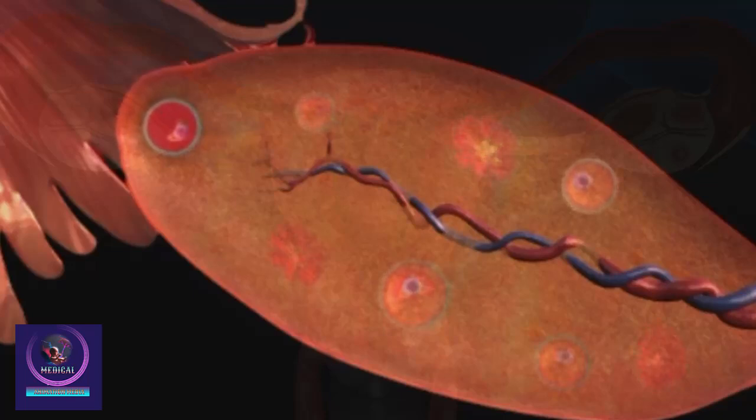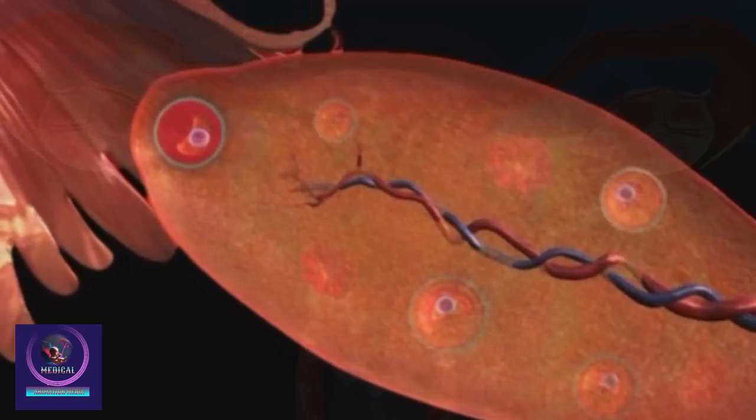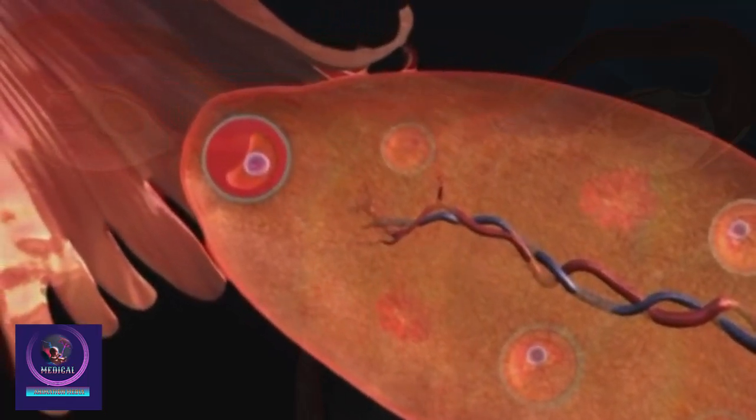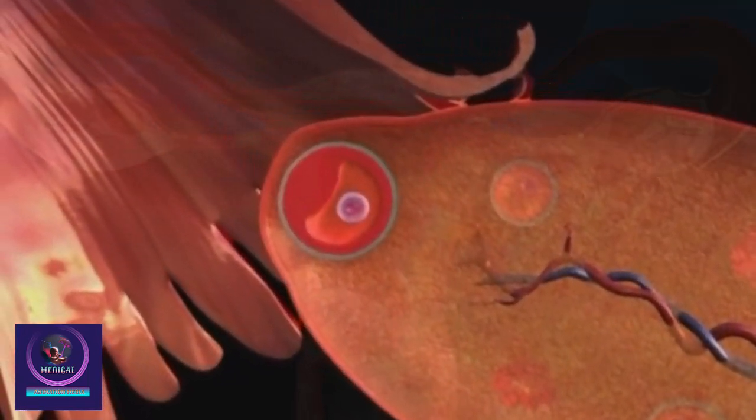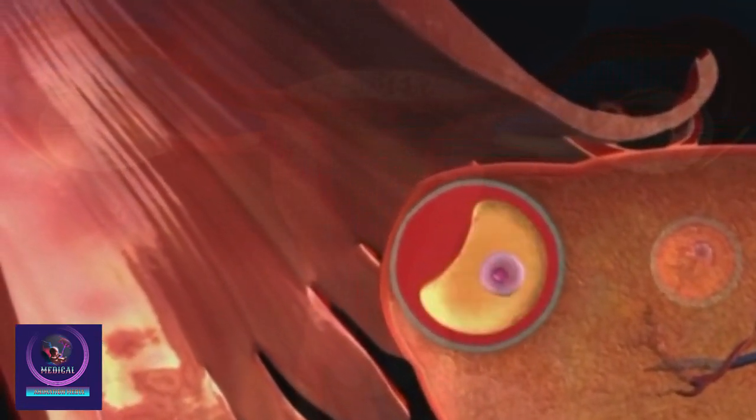Every month, several follicles start to grow. However, only one follicle reaches full development. Here, you can see the fully formed follicle pushing out against the wall of the ovary.